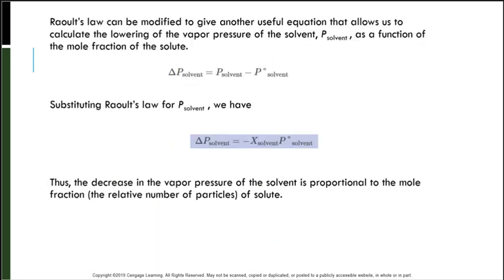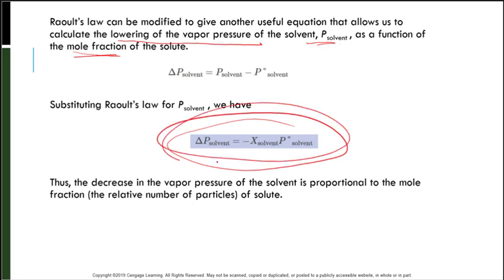We can also modify Raoult's Law to give another useful equation that allows us to calculate the lowering of the vapor pressure of the solvent as a function of the mole fraction of the solute. When we substitute Raoult's Law for P_solvent, we get a useful equation, so keep that on the back burner. The decrease in vapor pressure of the solvent is proportional to the mole fraction — relative to the number of particles of the solute.